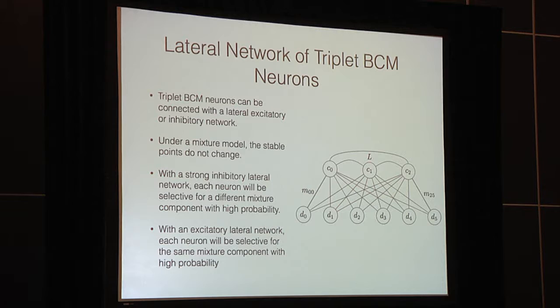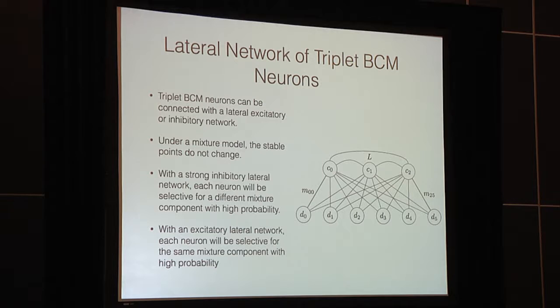One of our neurons will eventually stabilize to be selective for one and only one mixture. Ideally you'd want different neurons to be selective for different mixtures. You can construct a lateral network that achieves precisely this: three triplet BCM neurons C0, C1, and C2 sharing the same input, connected by a lateral inhibitory network L. Under mixture model input, the stable points don't change. However, with a strong inhibitory lateral network, each neuron will be selective for a different mixture component with high probability. With an excitatory network, each neuron will be selective for the same mixture component, also with high probability.